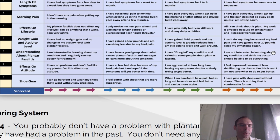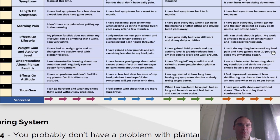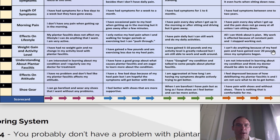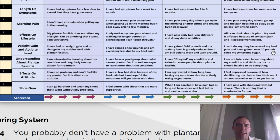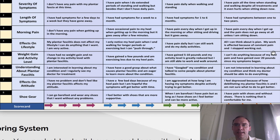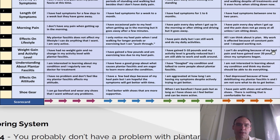Question eight, shoe gear. Score 1, 2, or 3: I can go barefoot and wear the shoes that I want without any problems. Score 4, 5, or 6: I feel better with shoes that are more supportive. Score 7, 8, or 9: when I am barefoot, I have pain, but as long as I have shoes on, I feel better and I can be more active. Score 10, 11, or 12: I have pain with shoes and without shoes. There is nothing that is comfortable for me.